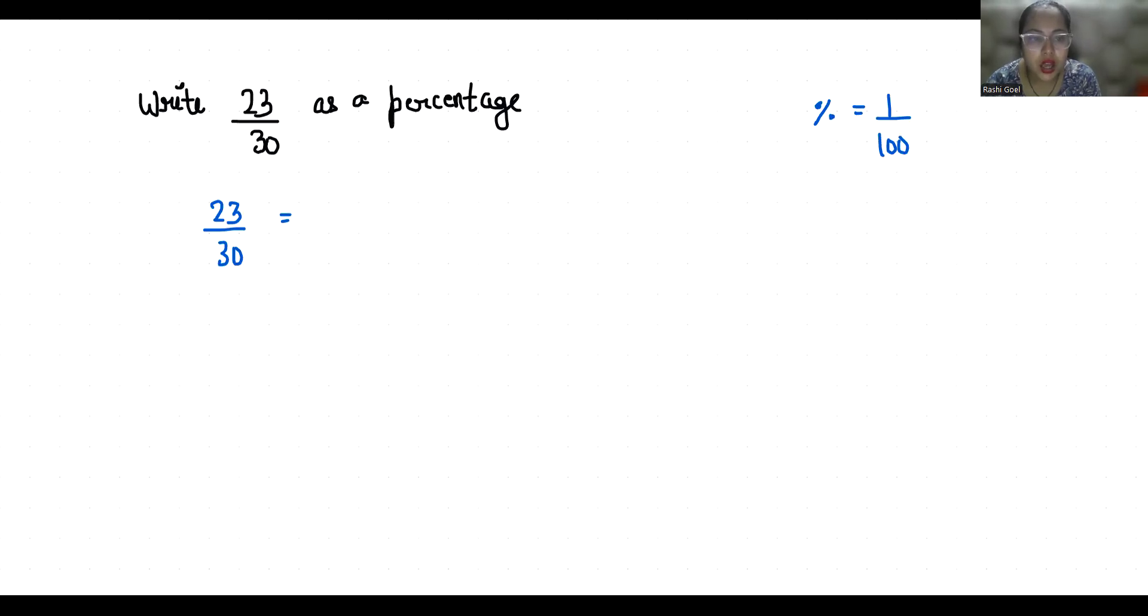So 23 by 30. Now I'm going to multiply with 100 in numerator as well as in denominator. So 23 times 100 is 2300 by 30 times 100.